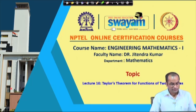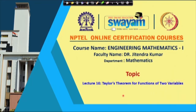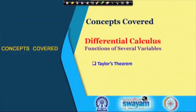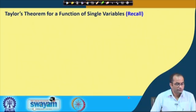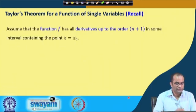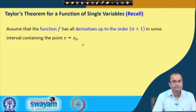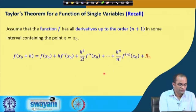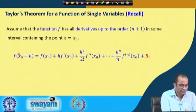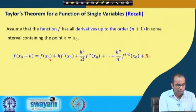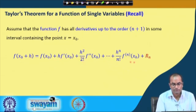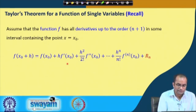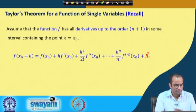Welcome back to the lectures on Engineering Mathematics 1. This is lecture number 16 and we will learn Taylor's theorem for functions of two variables. To begin, we need to recall Taylor's theorem for functions of a single variable. Assume that f has all derivatives up to order n+1 in some interval containing the point x = x₀, and in that case we can write down f(x₀+h).